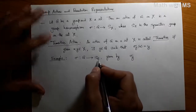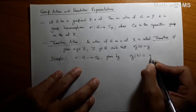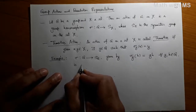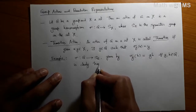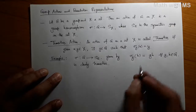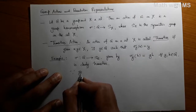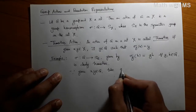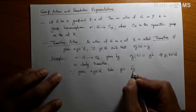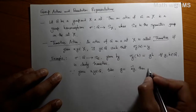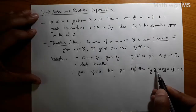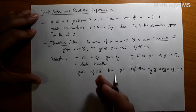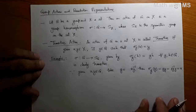The map sigma from G to S of G given by sigma G acting on any H as simply GH for all G and H in the group G is clearly transitive. Because given X and Y in the group G, take G to be X inverse Y, then sigma G of Y, which is GY by definition, is same as XY inverse Y, that is X. So left translation of a group on itself is always a transitive action. Similarly for right translation.